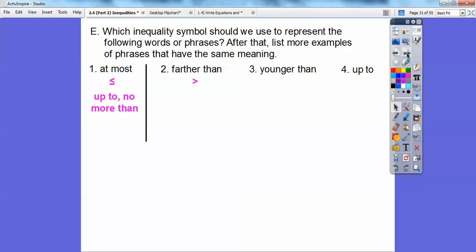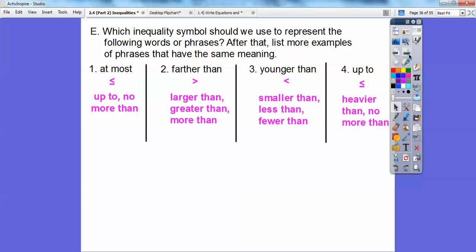Farther than is greater. Other ways to say that are larger than, greater than, more than. Younger than would be less than. So less than, smaller than, fewer than. And up to, well up to is the same as at most, so this one's going to be less than or equal to. Heavier than or no more than. List some examples of other kinds of phrases you can say for all of that.